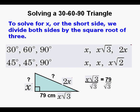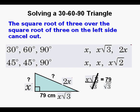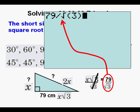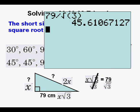To solve for x or the short side, we divide both sides by √3. Those cancel out on the left side. The short side x is 79 divided by √3. Here it is in our calculator: 45.6 centimeters.